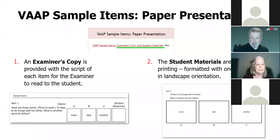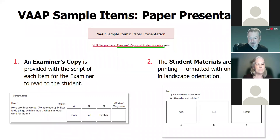This is the paper presentation or paper version. That PDF contains what the examiner's copy would look like. Each page would have maybe two, three, or four items. However, the student copy will have one item per page.